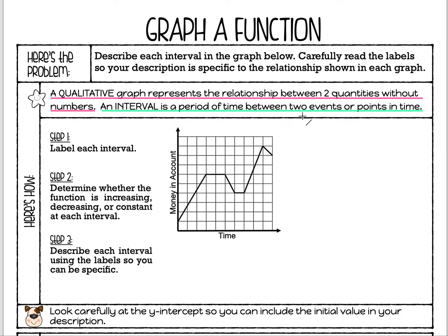An interval is a period of time between two events or points in time. This graph has a lot of intervals — every little piece of the graph is an interval. I'm going to label them: this first line segment is interval one, the next is interval two, then interval three, four, going up here is five, and down here is six. So we have six intervals — six different things happening in this graph.